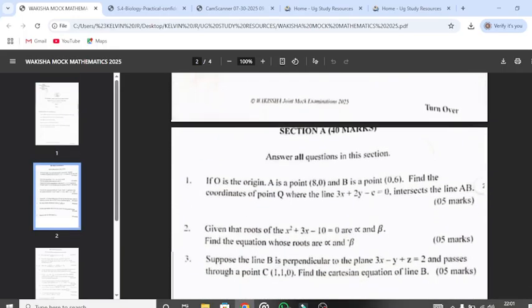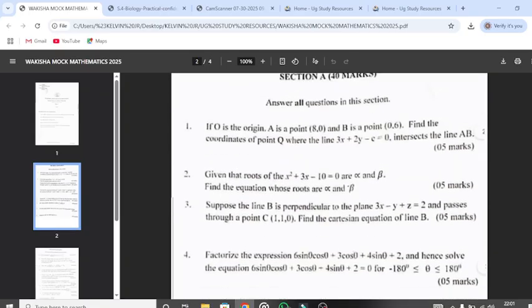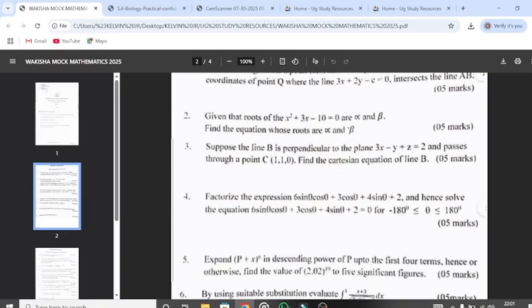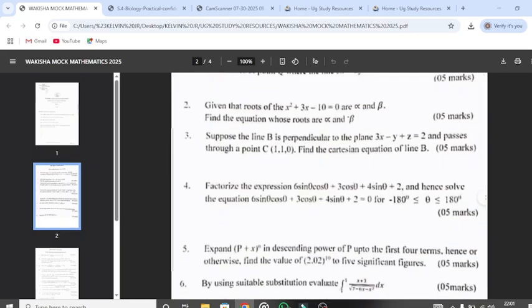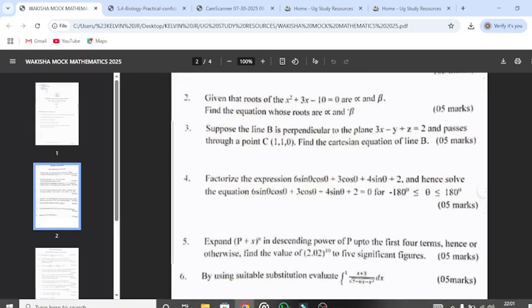As you can see here, section A number one came from geometry and you see number two came from algebra and these are roots. Number three, this is vectors as you can see. Number four is trigonometry.